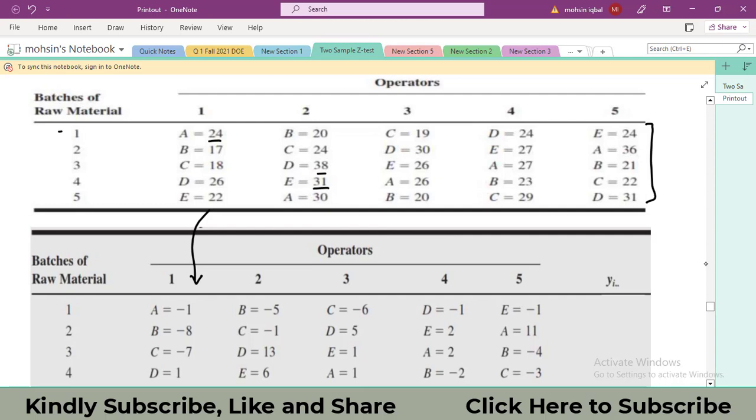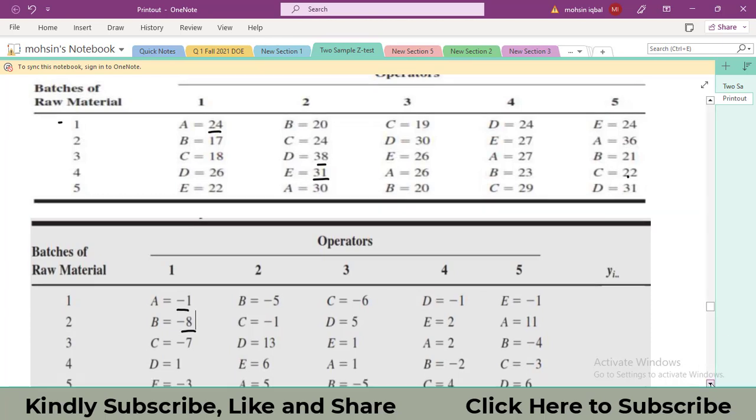How we'll do the recoding? We will subtract a digit from all of these observations, but the digit should be same for all. Let's suppose we subtract 25 from all these observations. 24 minus 25, it will be equal to minus 1. You can see it there. 20 minus 25, again it's minus 5. 31, 22 minus 25, minus 3. This coding will help you in getting data that will be quite smaller, like minus 1, minus 5. You can do the calculation quite easily.